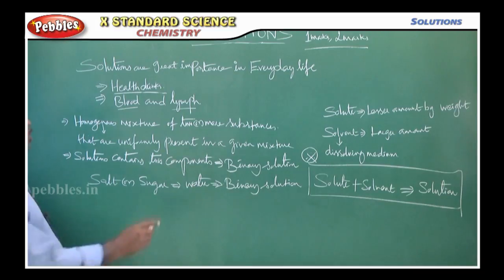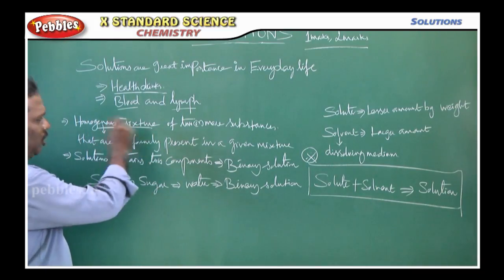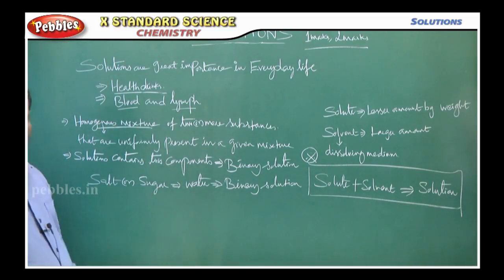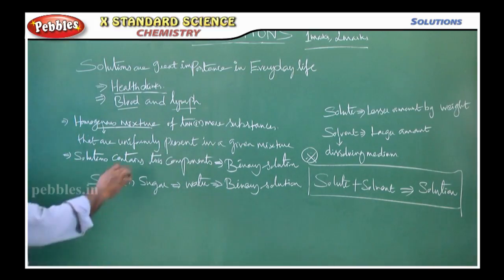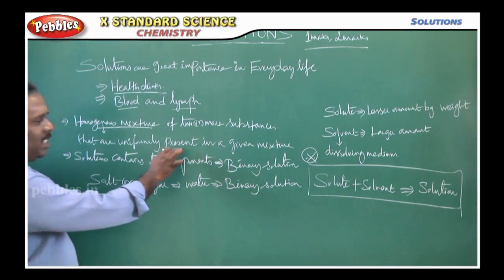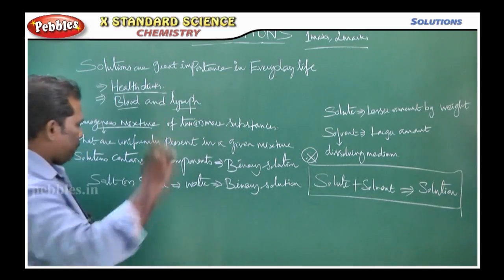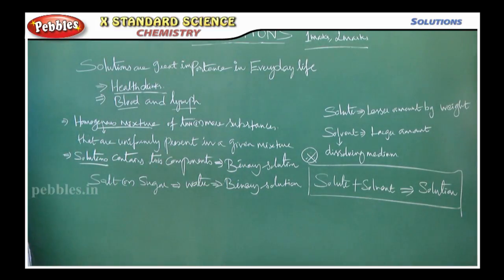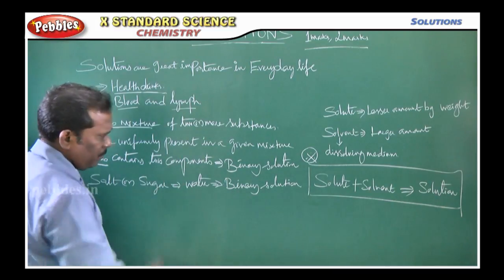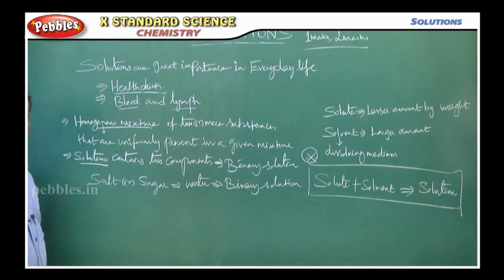Normally, solutions are homogeneous mixtures of two or more substances that are uniformly present in a given mixture. A solution contains two components, so it is considered a binary solution.